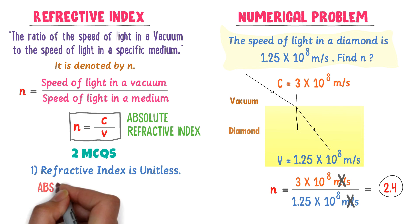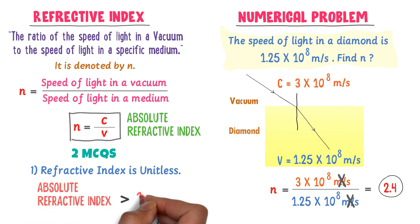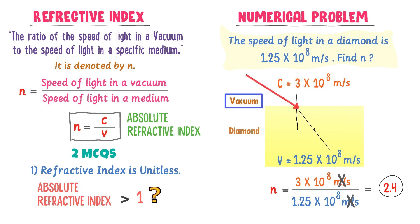Second, absolute refractive index is always greater than 1. This is because in the case of absolute refractive index, light always travels from vacuum, a rarer medium, into a denser medium like glass. So the speed of light always slows down in the denser medium, and therefore the absolute refractive index is always greater than 1.